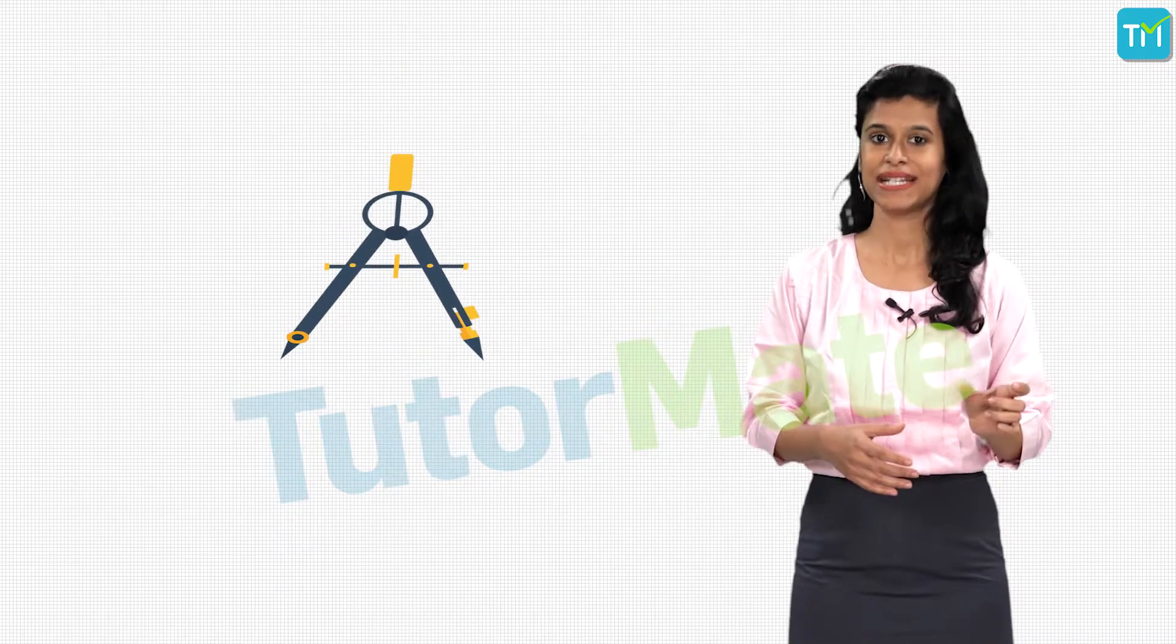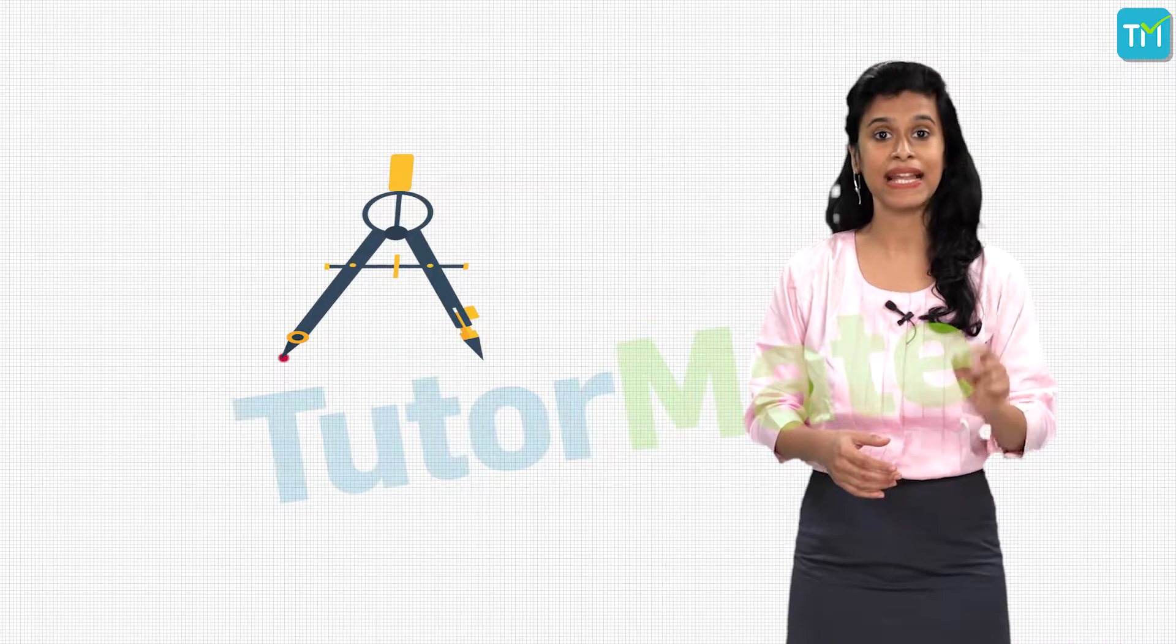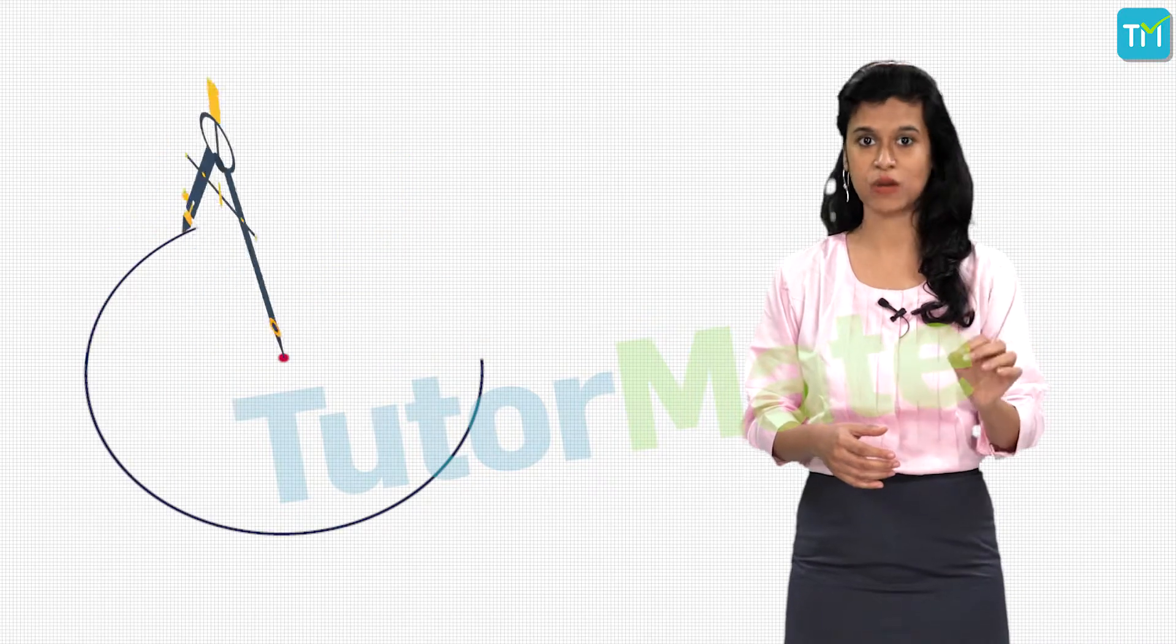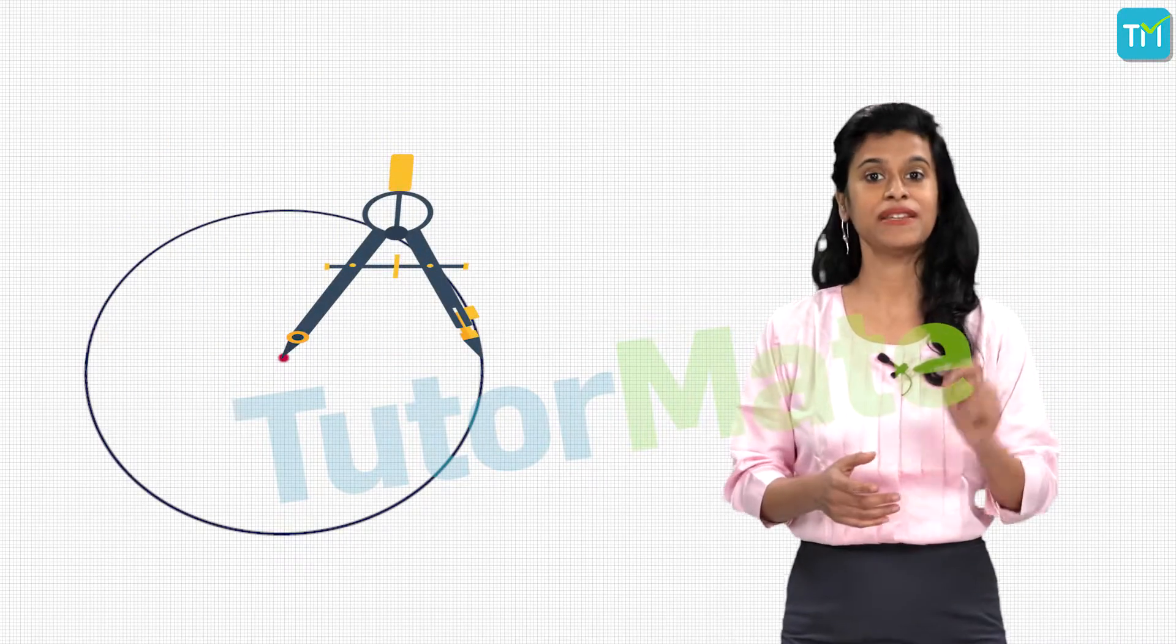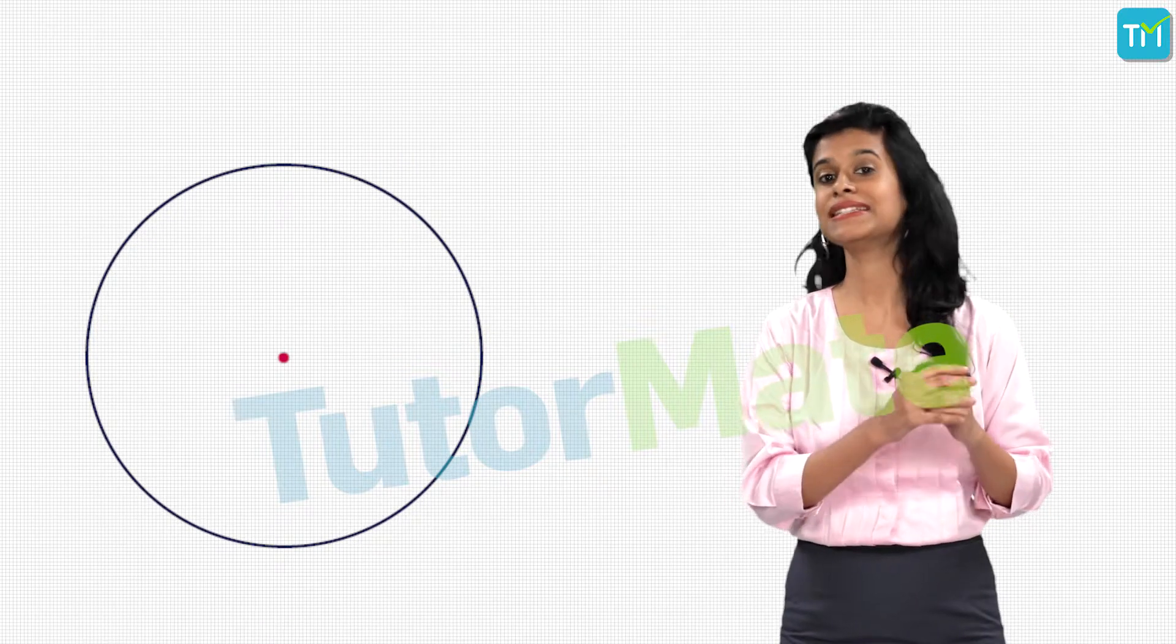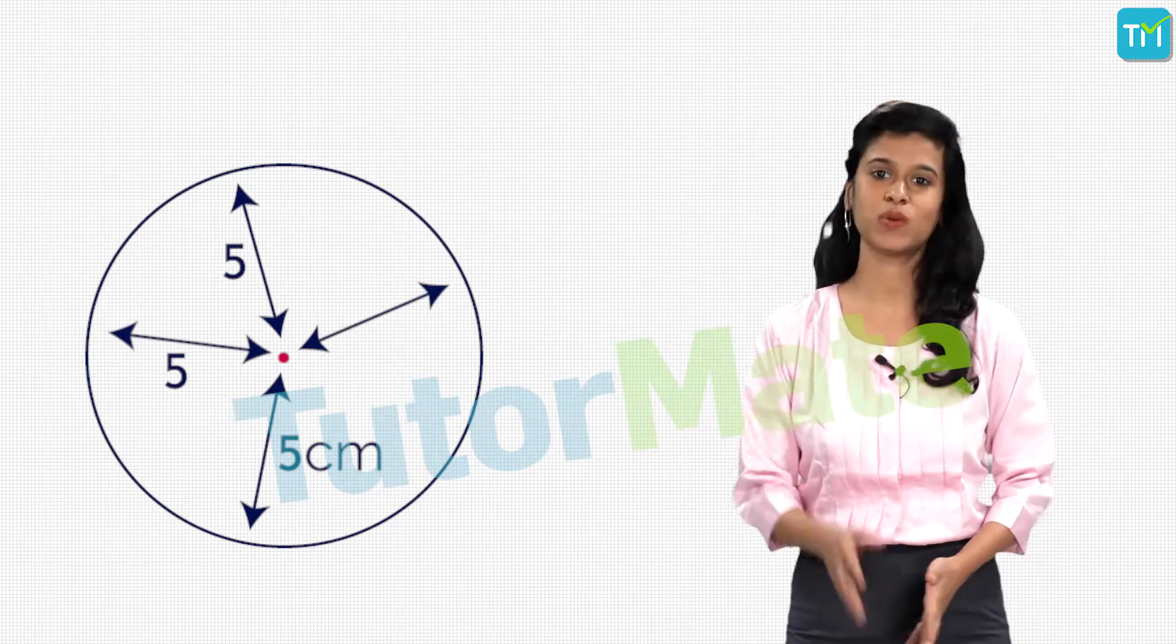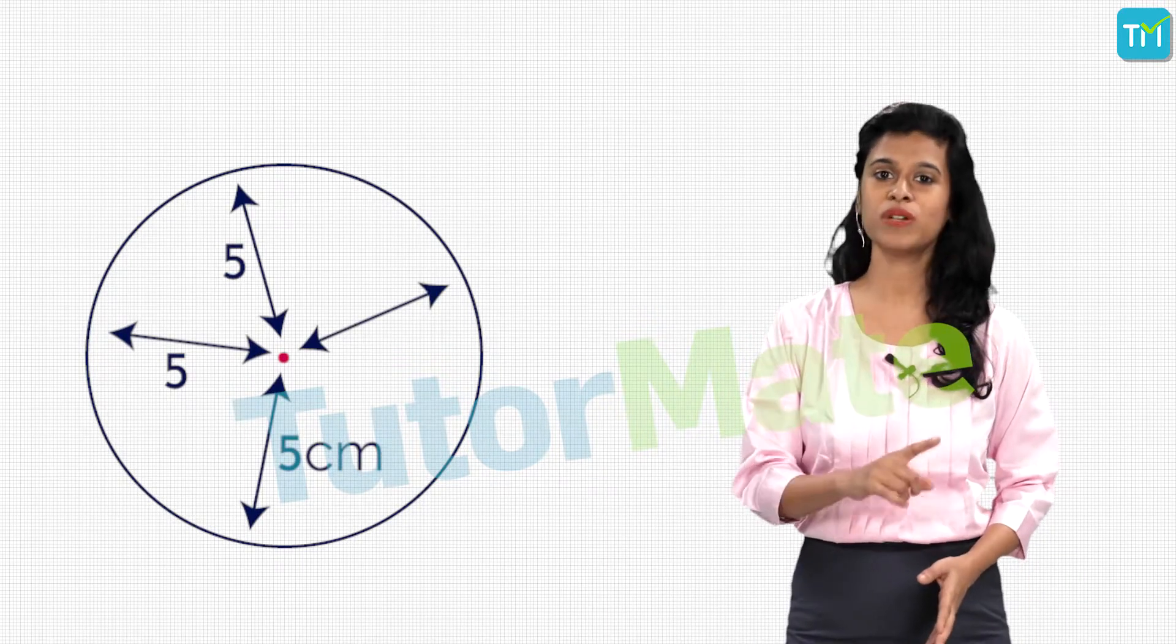And we rotate the pencil end of the compass around this point, and that way the figure we get is what we call a circle. And the radius of the circle is 5 centimeters. So we know what the center is and what the radius is, but before we move ahead, let's revise these terms once.